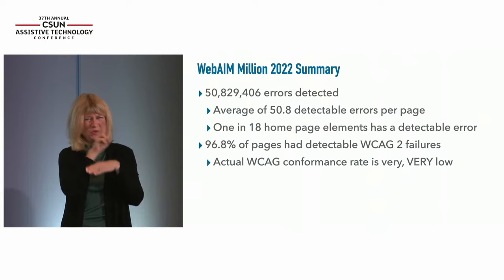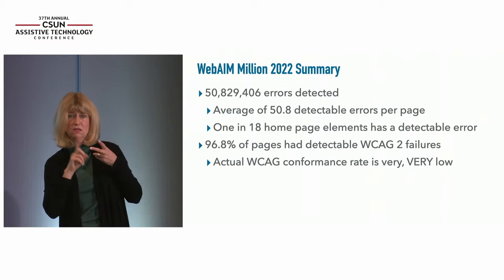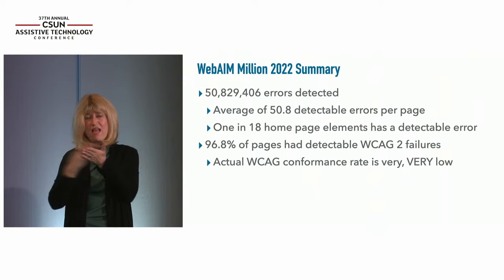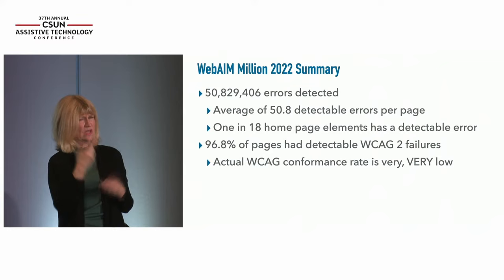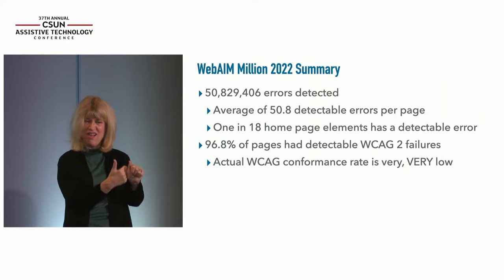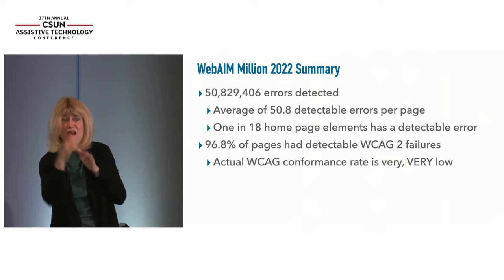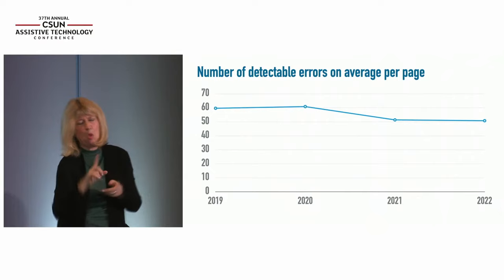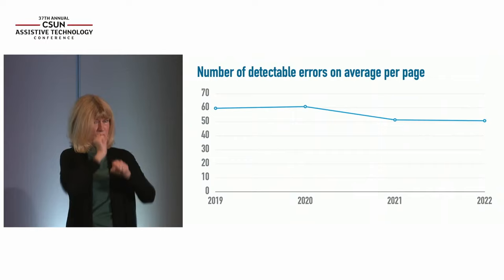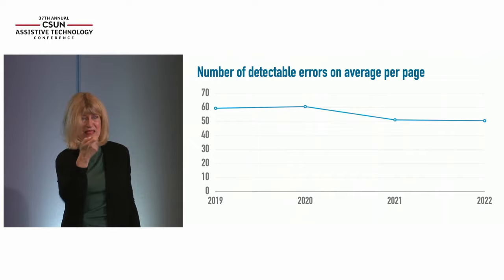96.8% of the pages we analyzed had a detectable WCAG 2 failure. This is only detectable errors — not all WCAG or accessibility errors or issues — so we know the actual conformance rate to those guidelines is really very, very low. When we talk about errors, those are things that using automated testing align with guideline failures and end user accessibility barriers with a very high level of reliability. I think that's an initial, sobering place to start — accessibility issues are quite pervasive on the web.